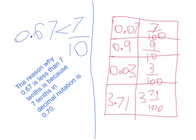7 hundredths in decimal notation is 7 hundredths in fraction notation. 9 tenths in decimal notation is on the left, and on the right it is 9 tenths in fraction notation.